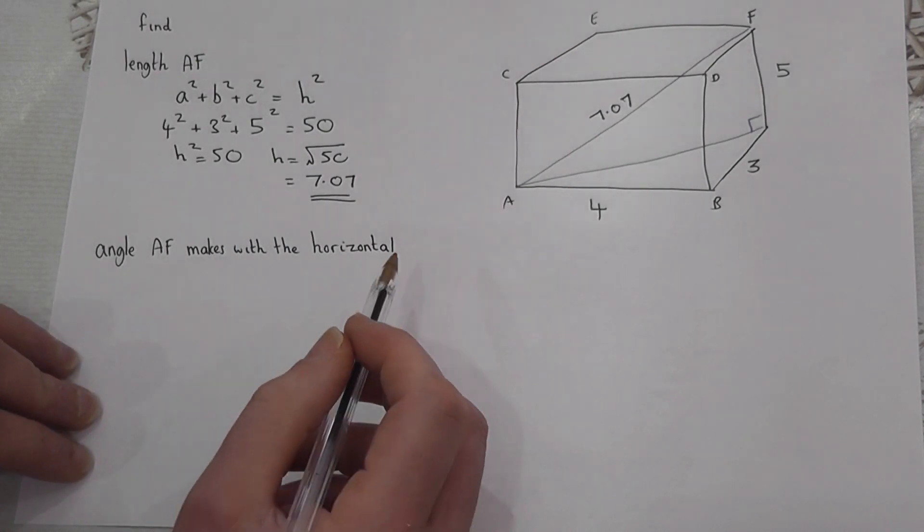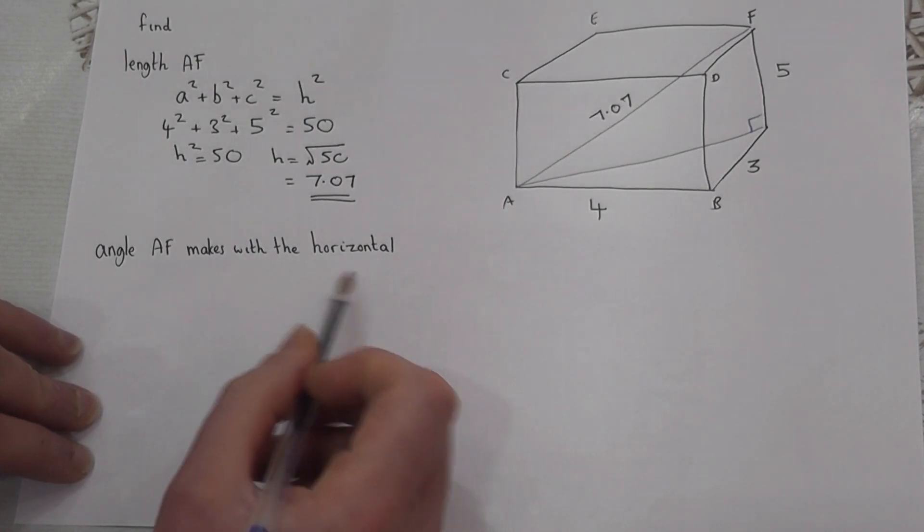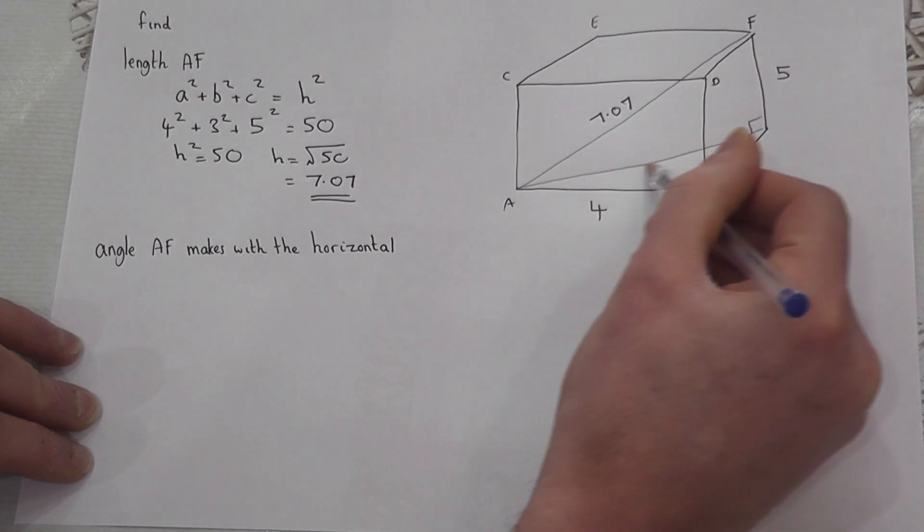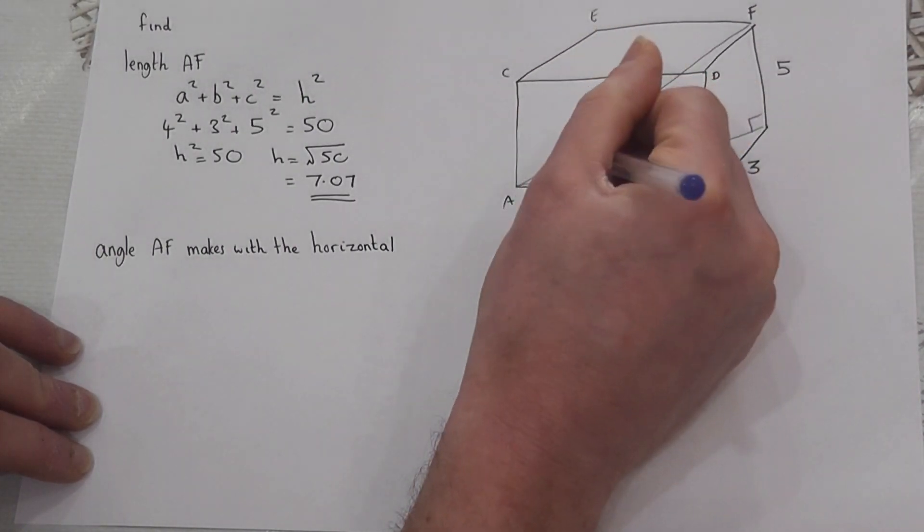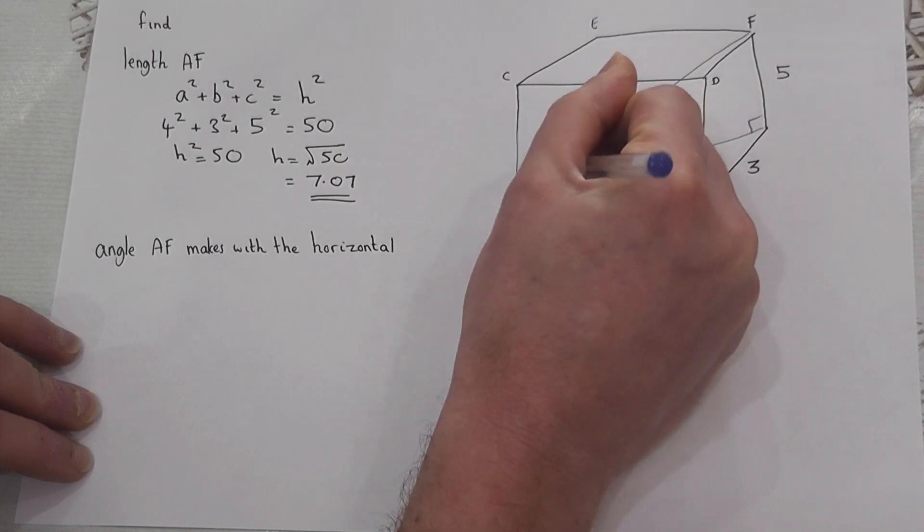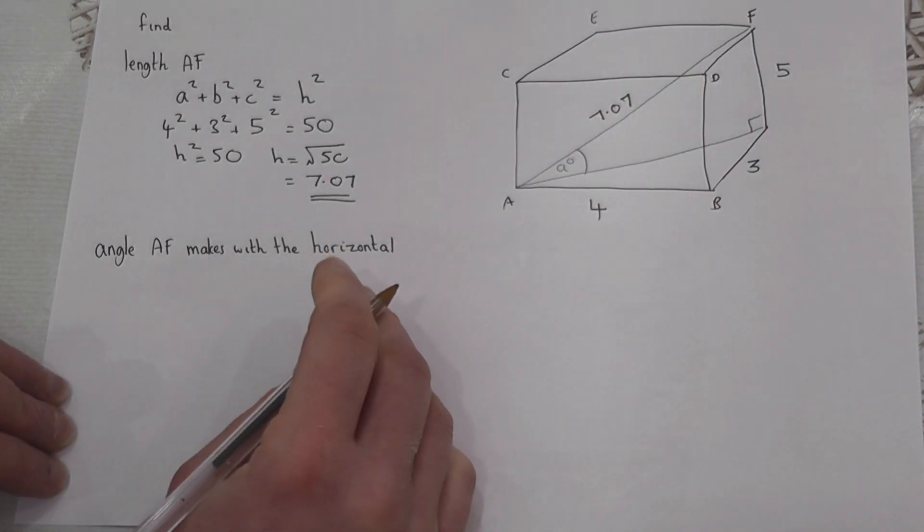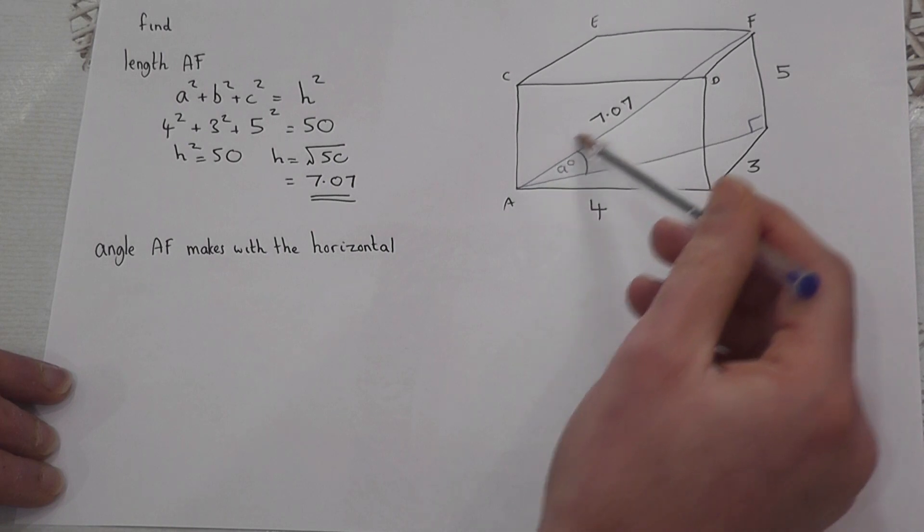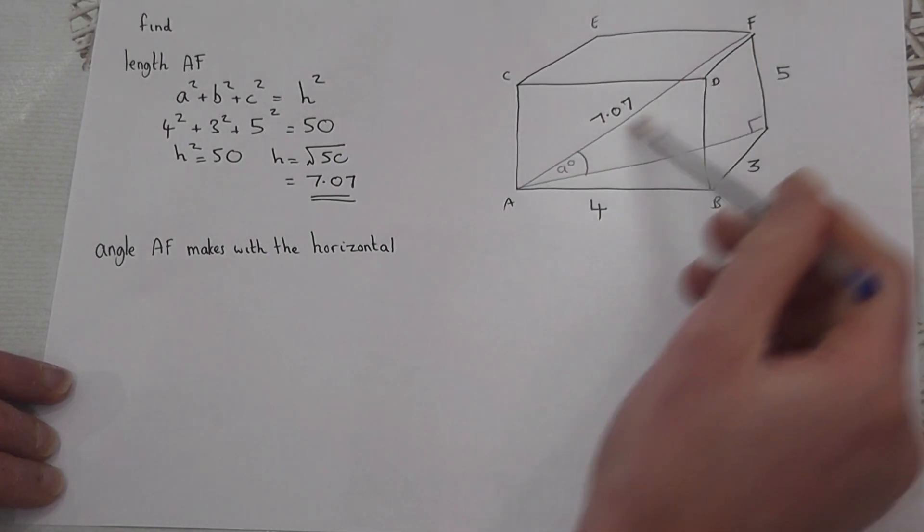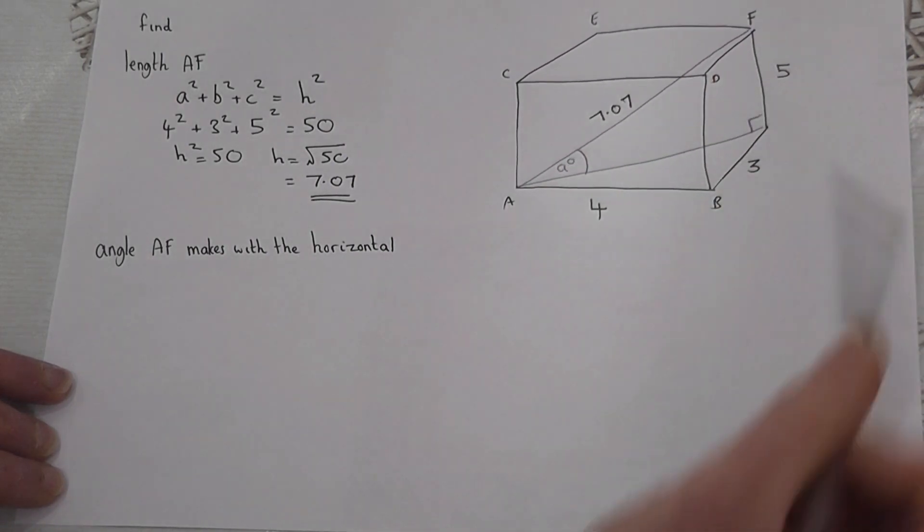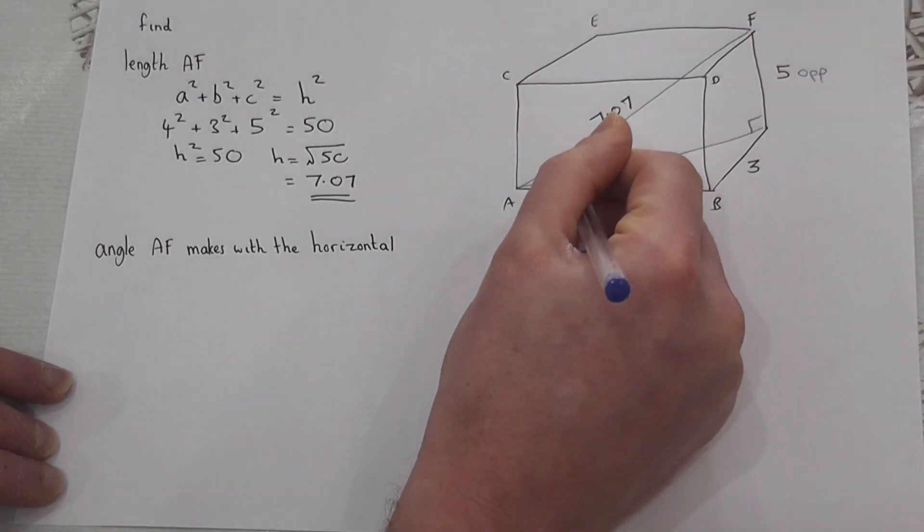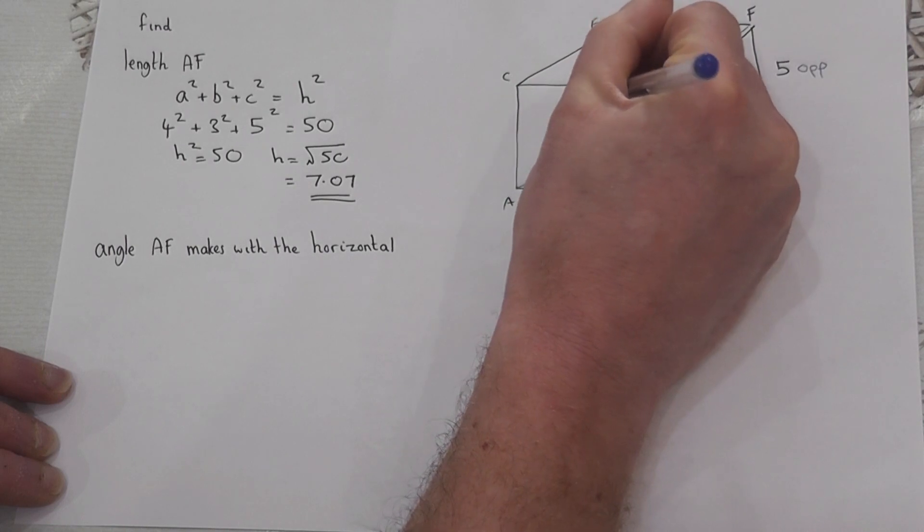So I can use trigonometry to find out the angle which AF makes with the horizontal. I'm going to present you two ways of doing this. Method one: if we found this length here, then we know the opposite to the angle and the hypotenuse.